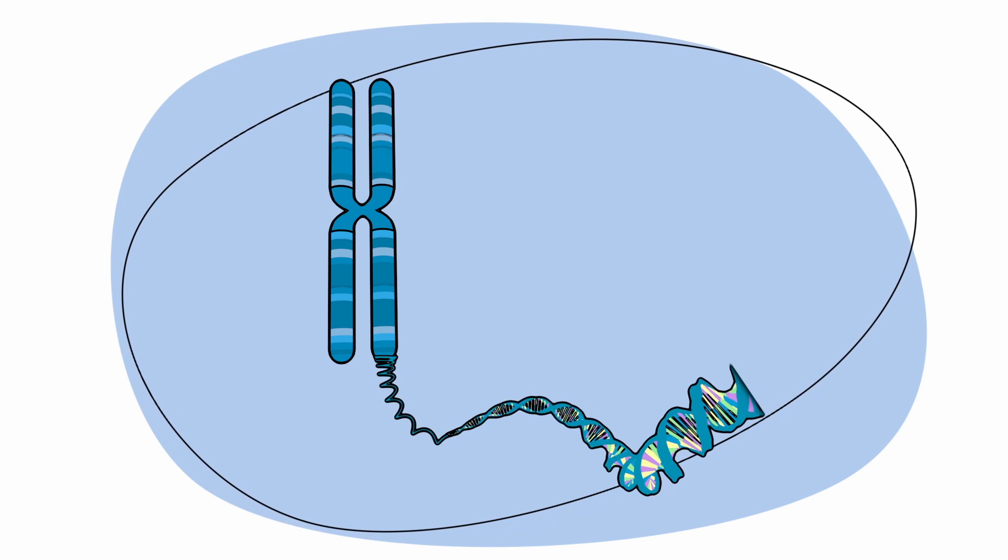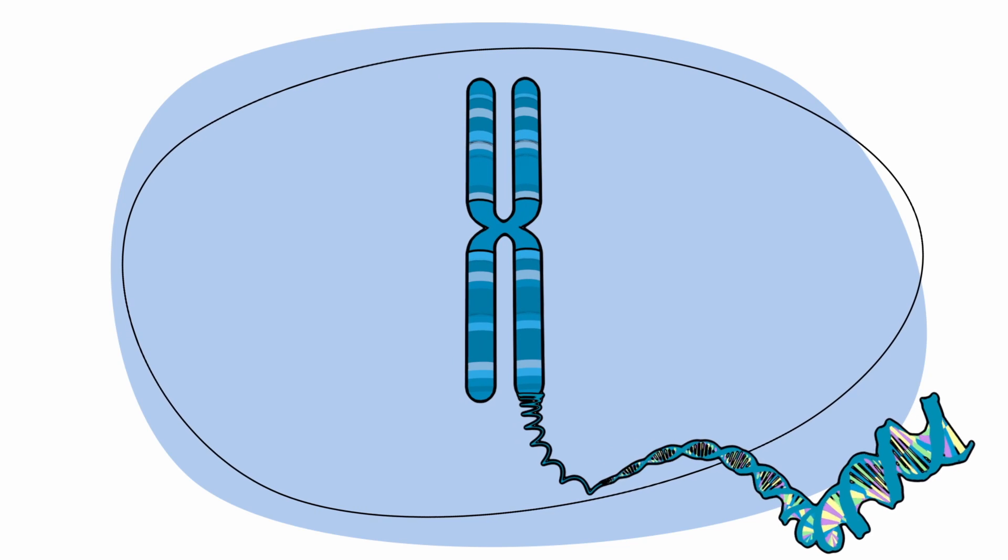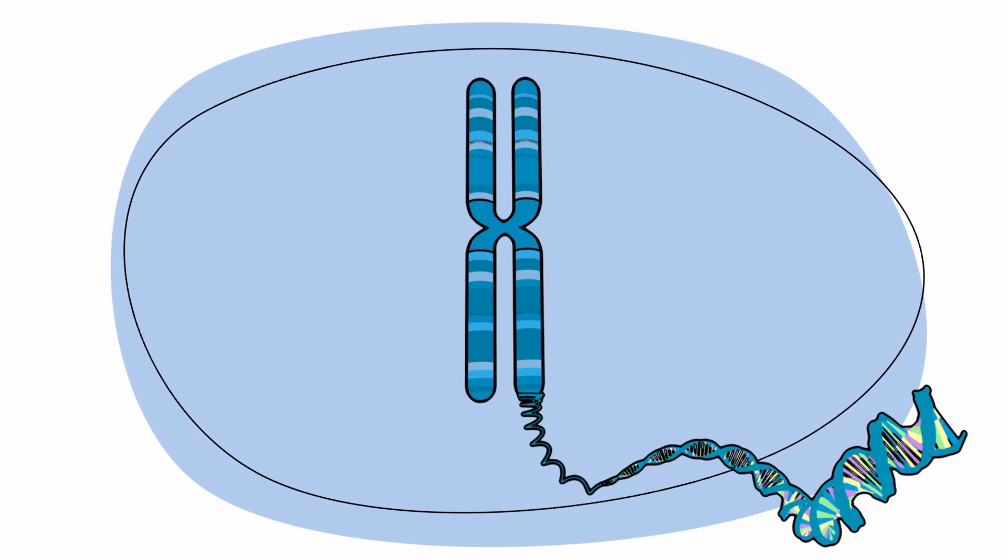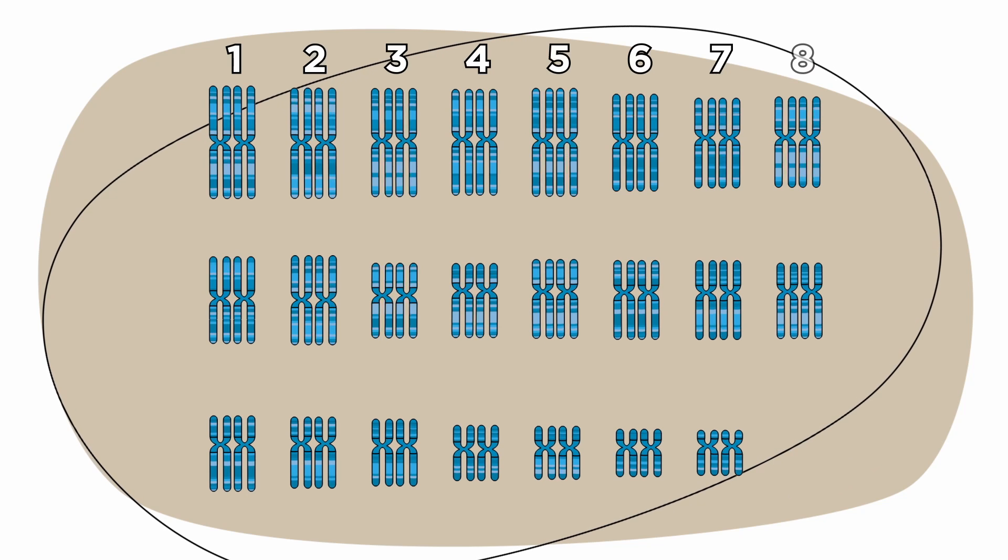DNA is organized into tightly coiled thread-like bundles called chromosomes that contain thousands of genes. We have 23 pairs of chromosomes, each different in their length, shape, and the number and type of genes they carry.